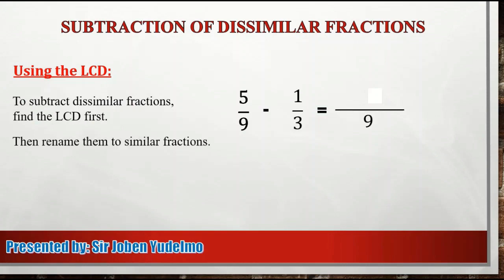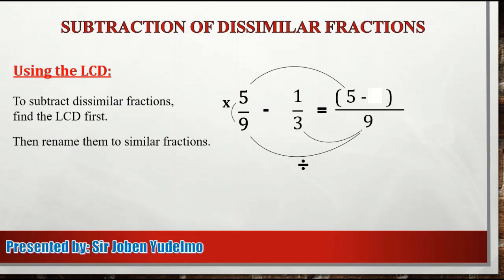Next step, we are going to rename them to similar fractions. Para ma-rename sila into similar fractions, kailangan natin i-divide ang kanilang LCD by their denominators. So una, ang 9, i-divide natin sa denominator ng unang fraction, which is 9. So 9 divided by 9 is equal to 1. And then, multiply the result to the numerator, which is 5. So 1 times 5, we get 5. Susulat ang sagot sa itaas ng fraction bar. Next step, divide 9 by the denominator of the second fraction, which is 3. 9 divided by 3 is equal to 3. And then, i-multiply ang sagot sa numerator, which is 1. So 1 times 3 is equal to 3. And at that point, similar fractions na yan sila. So we can proceed to the next step.